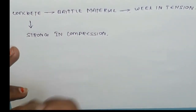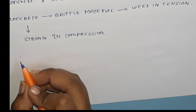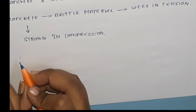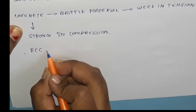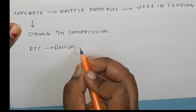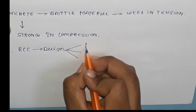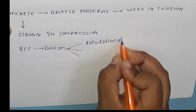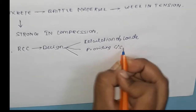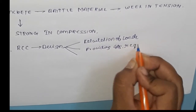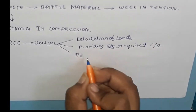So this is the introduction to RCC. Before going to the design of any structure — whether a building or a hydraulic structure — we are going to design it using RCC, and that designing involves two methods. Designing involves: calculation of loads, providing the required cross-section, and reinforcement details.